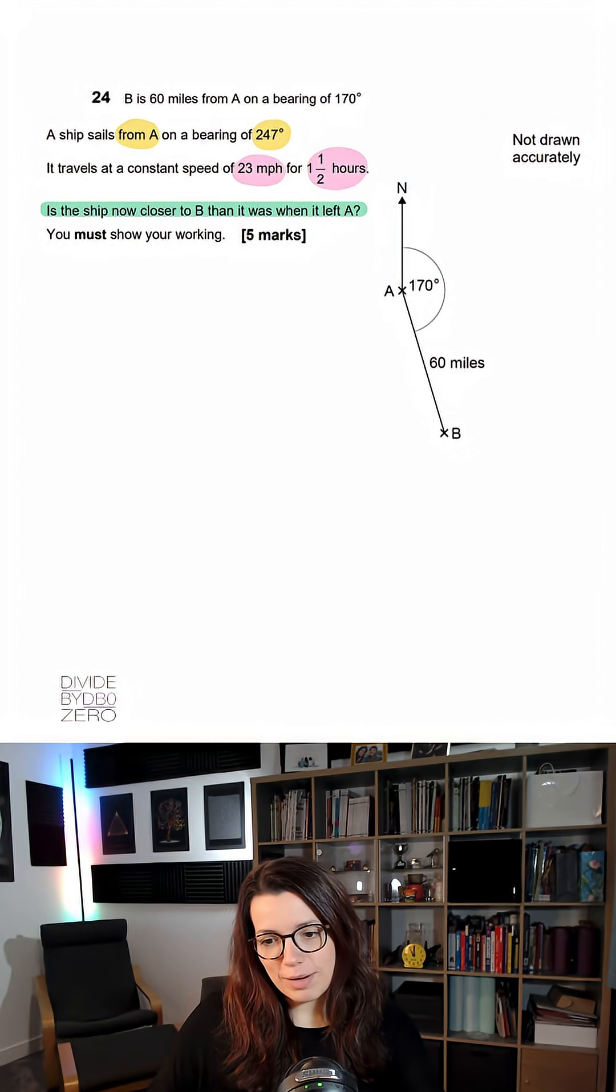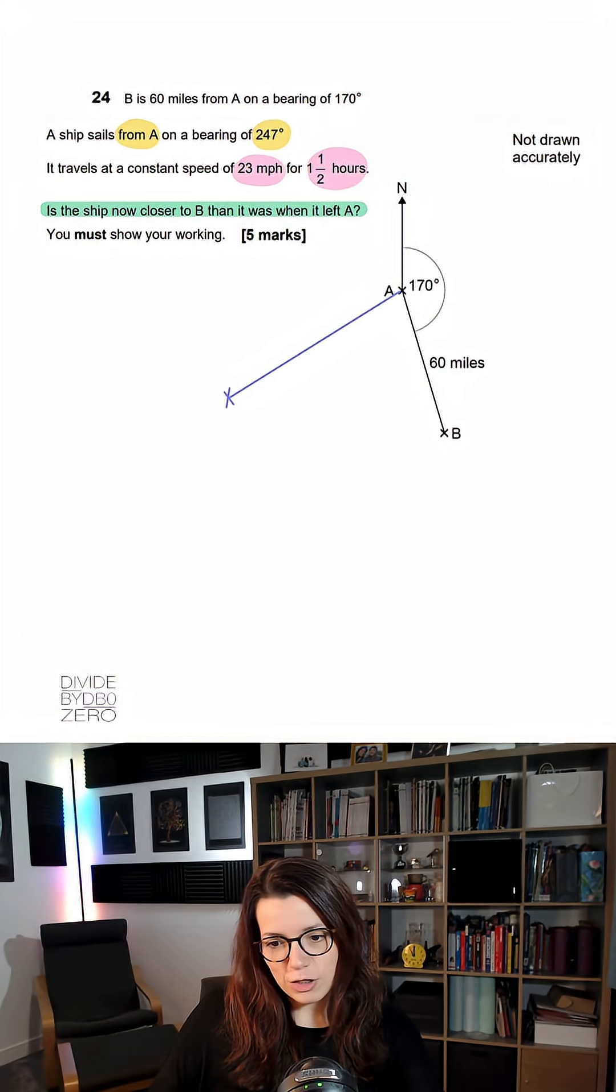So first thing I would do is represent this journey on the diagram. We know the ship is sailing from A one and a half hours, so I'm going to say that it stops there. Here is the new position.